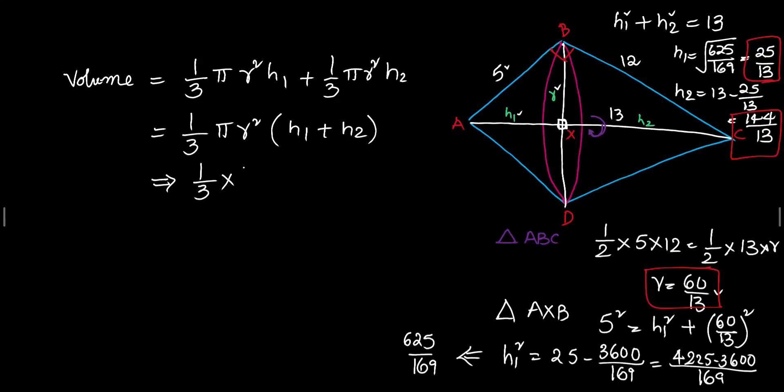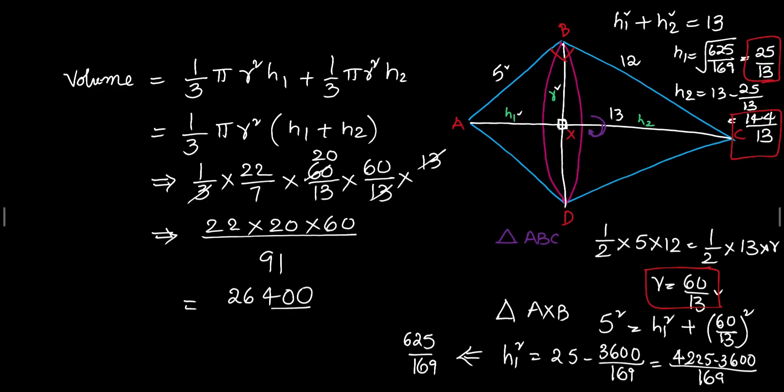So I can directly go ahead and write down 1 by 3 into 22 by 7 into R square that is 60 by 13 into 60 by 13 multiply with H1 plus H2 that is again 13 because we know that the hypotenuse is nothing but sum of the two different heights whatever we got. Now, 13 and 13 will cancel. So, what we have here now, 3 will go 20 times. So, we have 22 into 20 into 60 divided by 7, 13s are 91. Now, let us do this calculation. 22 times 2 are 44, 44 times 6 or 264, 264, 0, 0 divided by 91.